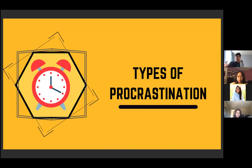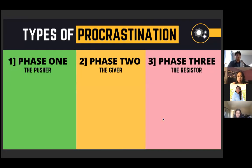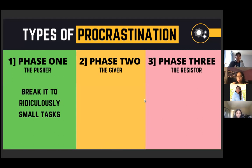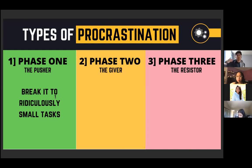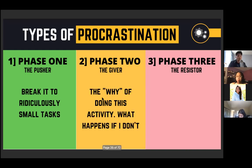There are three different types of procrastination. Once you recognize which type you are, you can manage it appropriately. Phase one is called the Pusher. If you're a Pusher, you just need a little push — the solution is to break tasks down into ridiculously small pieces. If you don't want to study, all you have to do is break it down: 'I'm just going to open my textbook.' Then you're good to go.